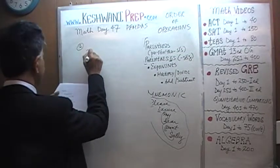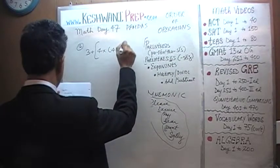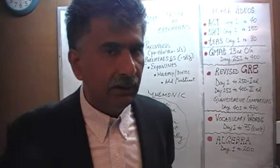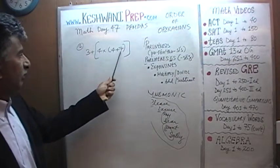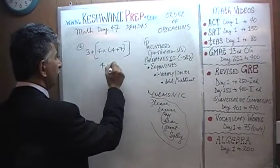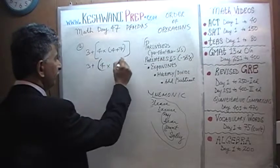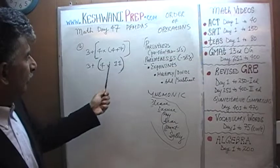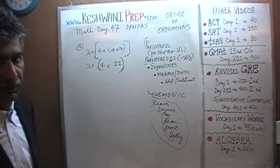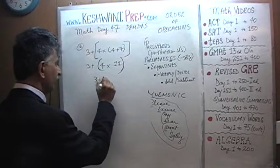Number 1: 3 plus 4 times (4 plus 7). Our job is to start with the innermost parentheses — that's (4 plus 7), which gives us 11. So we end up with 4 times 11, plus 3. I changed the form of the outer parenthesis, but it doesn't matter now since the inner one is gone — it has no significance. 4 times 11 is 44, so we end up with 3 plus 44, which is 47.